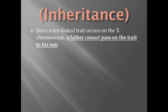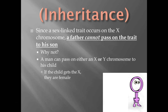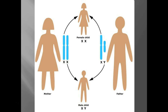Since a sex-linked trait occurs on the X chromosome, a dad can't actually give this trait to his son — like colorblindness. If a man is colorblind, it's not his dad's fault. A man can pass either the X or the Y chromosome. If you pass on the X chromosome, the child will be female; if you pass on the Y chromosome, they'll be male. So a man would only give the Y chromosome to his son, which would not have the gene. If a guy is colorblind, blame the mom. A faulty gene a man can pass on to his child, but only to his female children — only to his daughters.